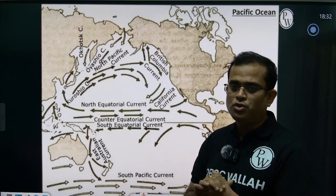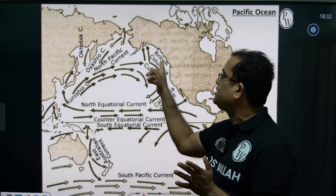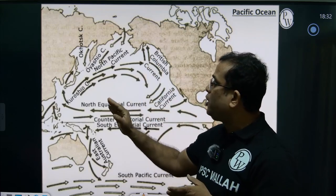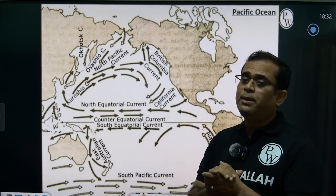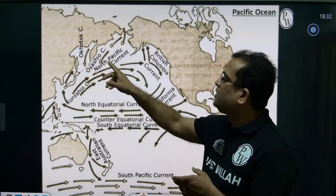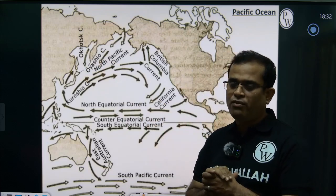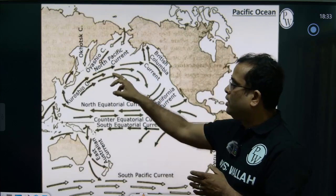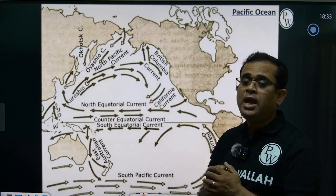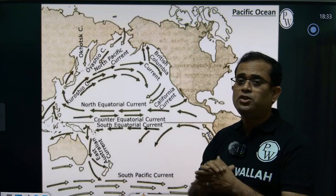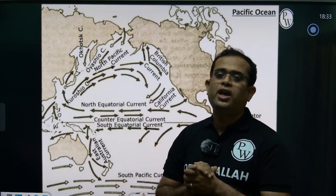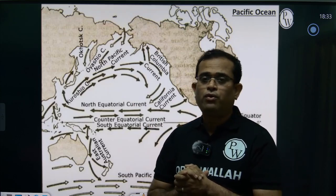After reaching the British Columbia coast of Canada, it bifurcates into two currents: the cold California Current and the warm British Columbia Current. Near the Japan coast, there are also two cold currents — the Oyashio Current from the Bering Sea and the Okhotsk Current near the coast of Sakhalin, Russia. These cold and warm currents meet near the Japan coast, producing a foggy environment that is one of the major fishing hubs, conducive for fish growth.